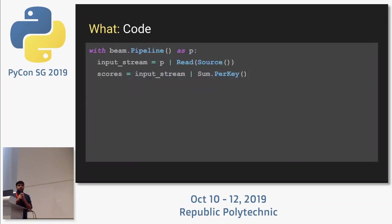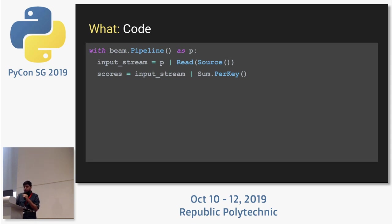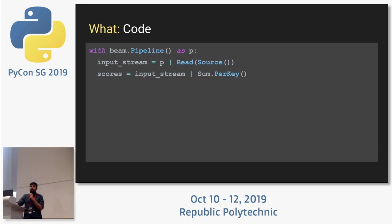In Beam, since this is a Python conference, we use Python for pseudocode. With 'beam.Pipeline() as p' we declare a pipeline — a context manager that runs the pipeline when the context ends. We read from an input stream source and calculate the sum per key, where our key is the user ID. This just calculates the total score, so we need to calculate points scored per user every two minutes.